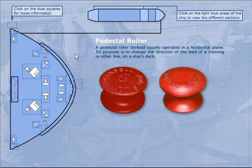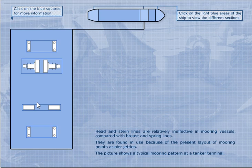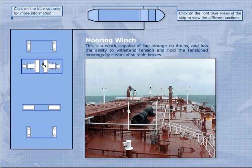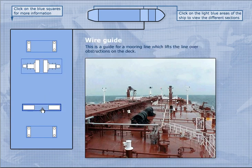Here is another mooring bollard, and here you can find a fairlead and a pedestal roller. A pedestal roller fairlead usually operates in a horizontal plane; its purpose is to change the direction of the lead of the mooring or other line on a ship's deck. Here you can also find a mooring bollard and a mooring winch.